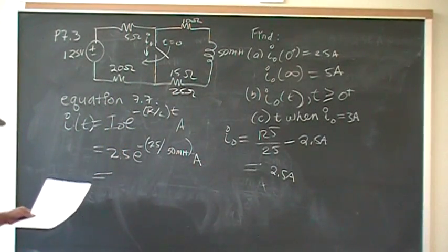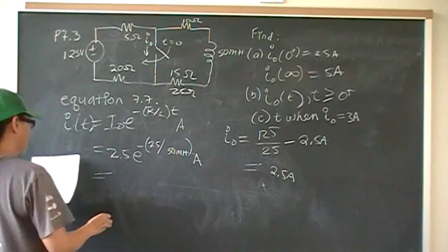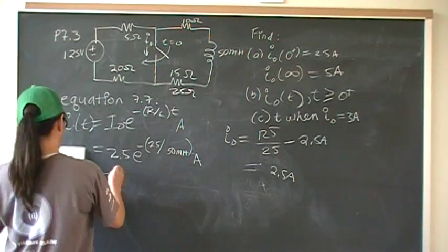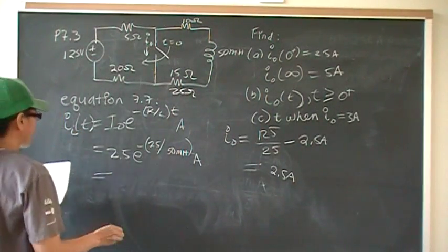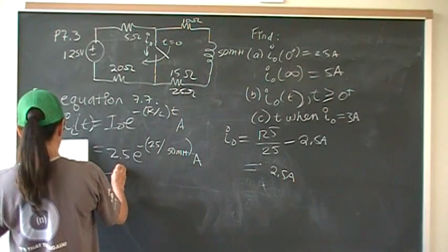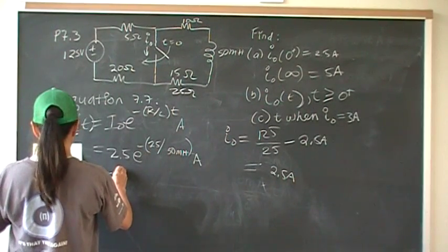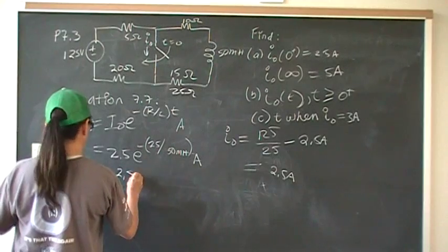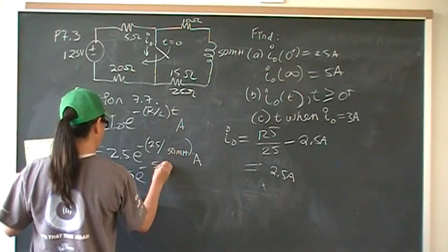And you put that in, you simplify that, and this is the inductor current that we need to subtract. So this is the inductor current, and that's going to be 2.5 E to the negative 500 T.